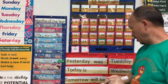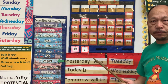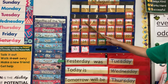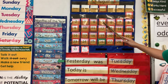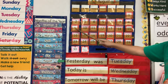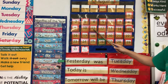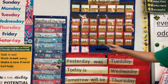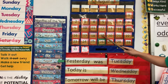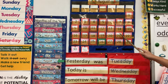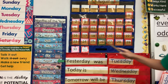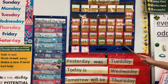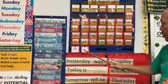Tomorrow will be Thursday. Count with me: 1, 2, 3, 4, 5, 6, 7, 8, 9, 10, 11, 12, 13, 14, 15, 16, 17, 18, 19, 20, 21, 22, 23, 24, 25, 26, 27, 28, 29, 30, 31.